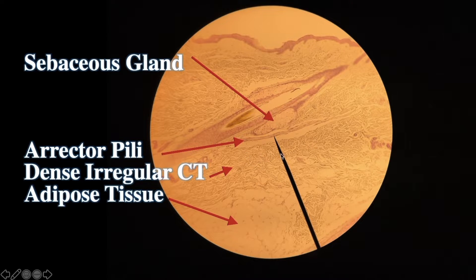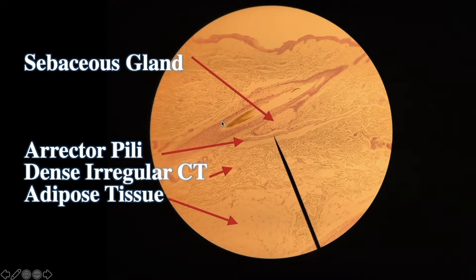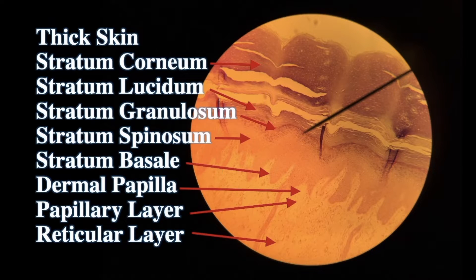Dense irregular — you see the collagen fibers going in every direction, so it's irregular. The dermis runs from the bottom of your epidermis to the top of the hypodermis. Dermis has two sub-layers: the papillary layer dominated by areolar connective tissue, which is the top one-fifth, and the reticular layer, which is the bottom four-fifths, dominated by dense irregular connective tissue. You can see here — papillary layer and reticular layer are labeled.